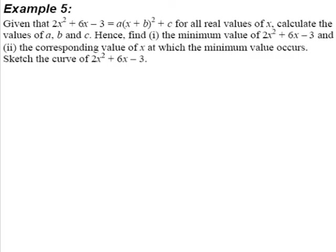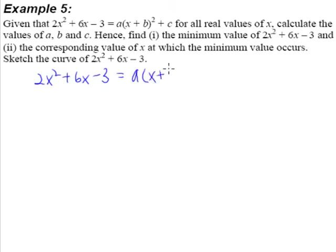Example 5 is more or less the same type of question as Example 4, except that we're dealing with a positive x squared — a minimum quadratic curve — rather than a negative x squared, which gives a maximum quadratic curve as we saw in Example 4. The question is the same in the sense that we are supposed to complete the square. Let's get started step by step one more time.